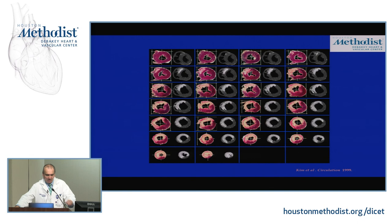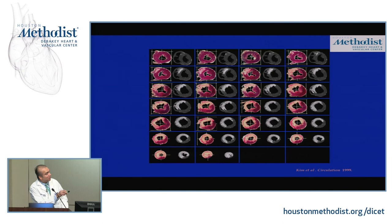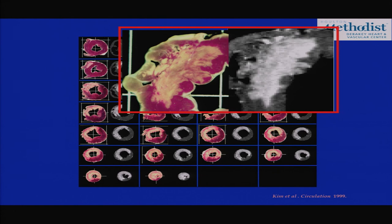The original publication demonstrating the delayed enhancement CMR technique was an animal model published in 1999. The LAD was ligated and histopathology was compared slice-by-slice with CMR images. The close relationship between CMR and histopathology is visible — blowing up one view shows that what you see at histopathology is almost a direct match to what you see by CMR. We now have a technique allowing us in living humans to directly visualize not just the presence of infarct, but the morphology of the infarct itself.